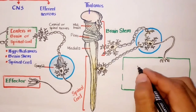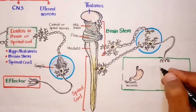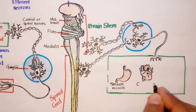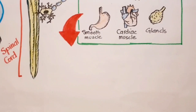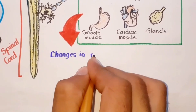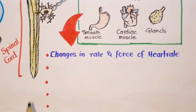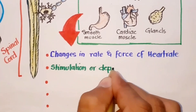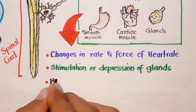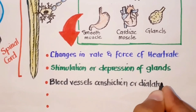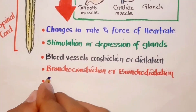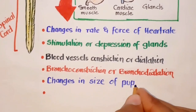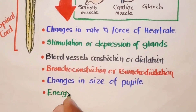The motor neurons of the autonomic nervous system innervate smooth muscle, cardiac muscles, and glands of our body. The effects of autonomic stimulation include: innervating the heart, leading to changes in rate and force of the heartbeat; stimulation or depression of secretion of glands like gastric, pancreatic, adrenal, and lacrimal glands; blood vessel constriction or dilation; bronchoconstriction or bronchodilation; changes in the size of the pupils of the eyes; and energy metabolism, particularly in the liver and skeletal muscles.